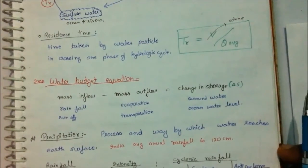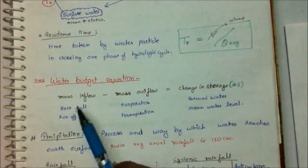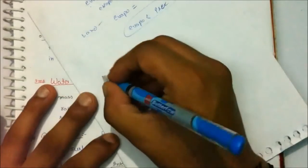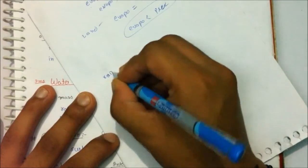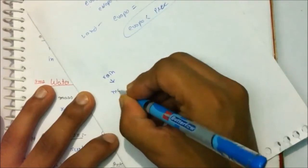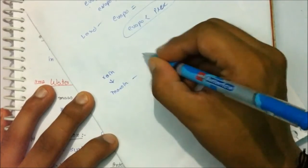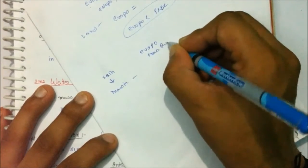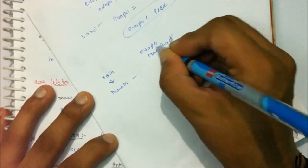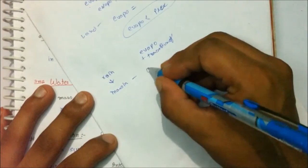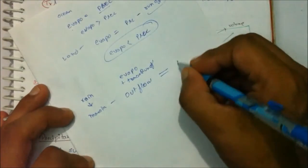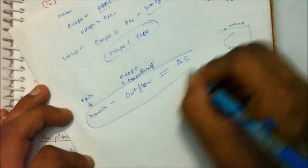Now coming up to the next very important topic, that is water budget equation. Water budget equation itself shows that mass inflow minus mass outflow is change in storage. Suppose we are having rain somewhere, that is mass inflow, minus we are having evaporation, transpiration, runoff, anything that counts on mass outflow. The net subtraction of it will give us the change in storage, delta S, the change in storage of that particular catchment area.